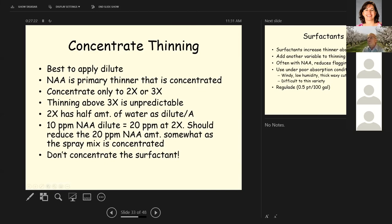A little note on concentrate thinning. I've mentioned it's best to apply it dilute. NAA is a primary thinner that's concentrated. You only want to concentrate two or three X thinning above three X is unpredictable. Two X has half the amount of water as a dilute per acre. For example, if you use 10 parts per million of NAA dilute, it would be 20 parts per million at two X in the tank. And you might want to reduce your parts per million slightly as the spray mix is concentrated. You do not want to concentrate the surfactant unless you want to have a bubble bath in the orchard. It can be unmanageable.